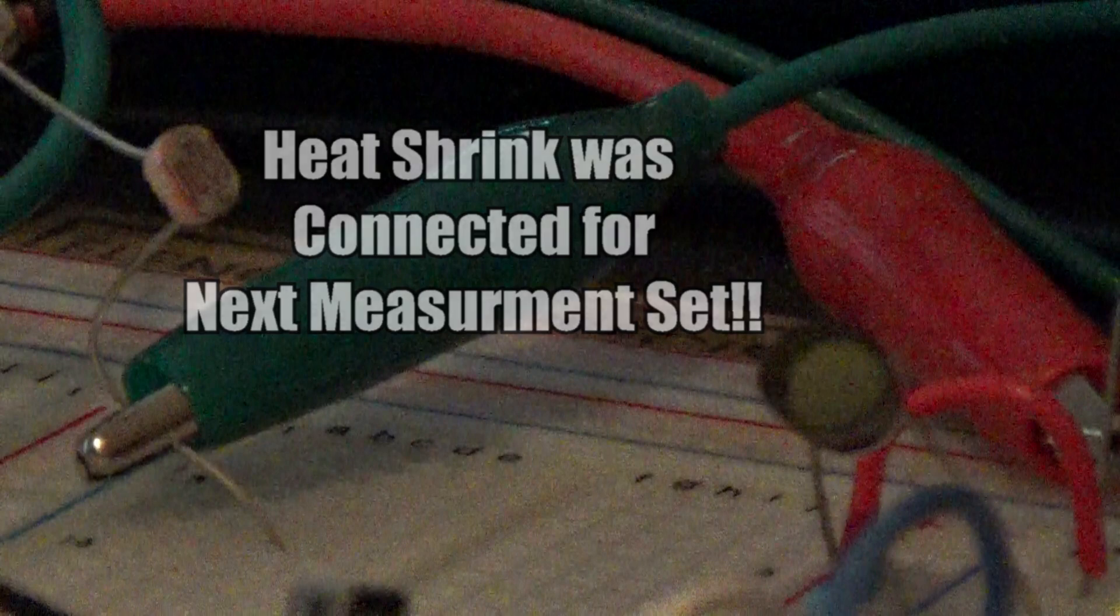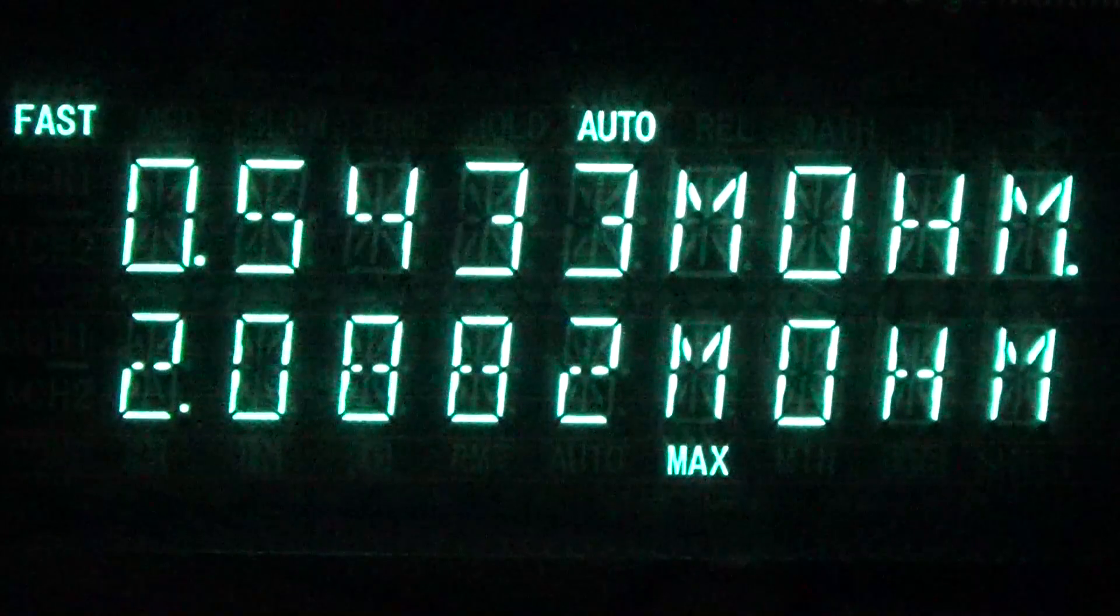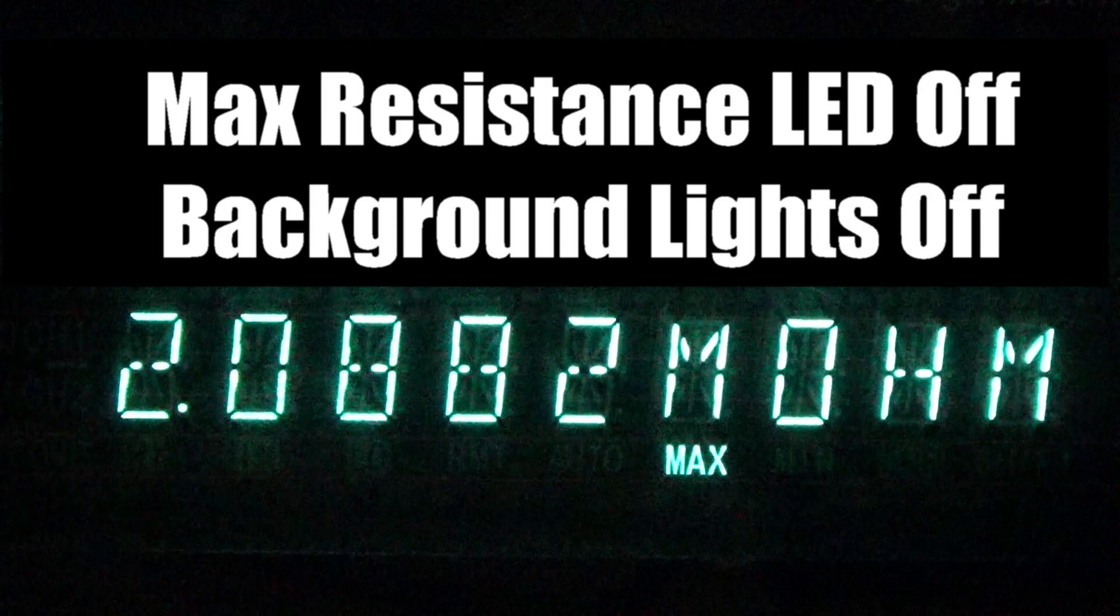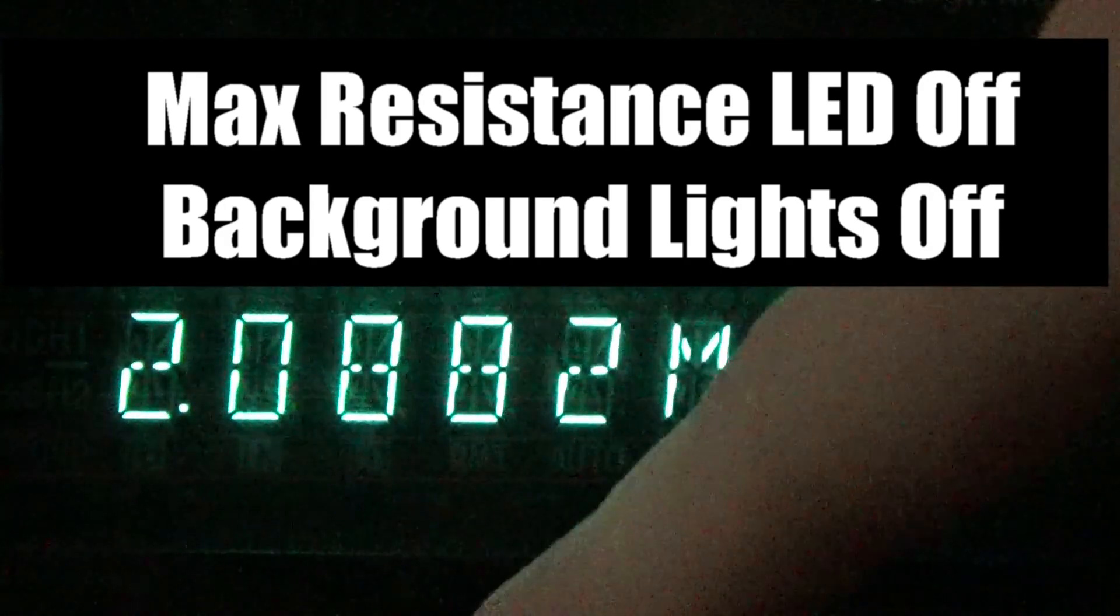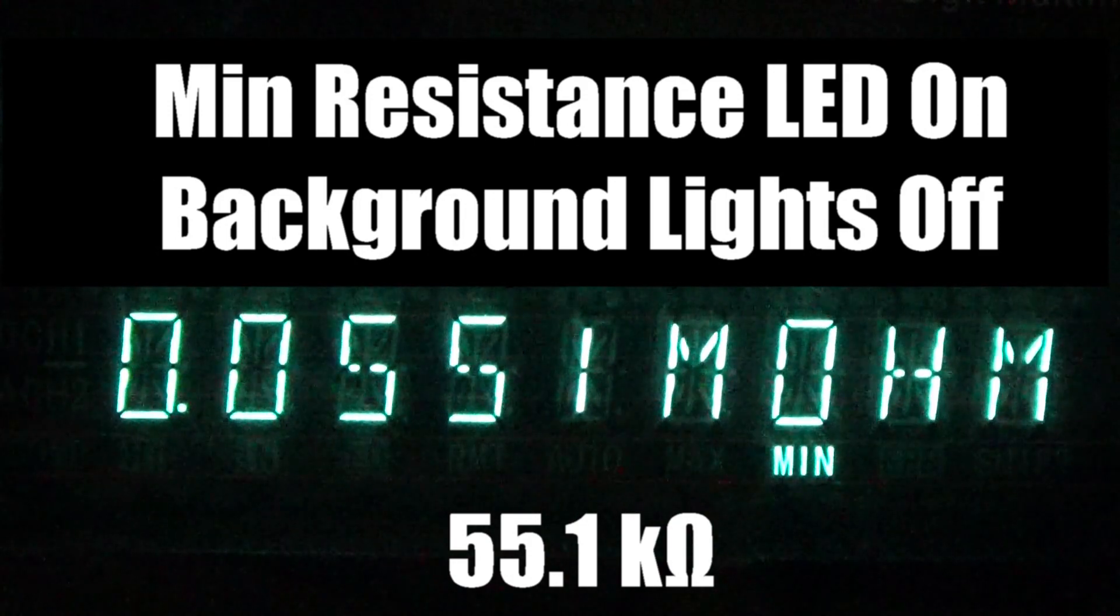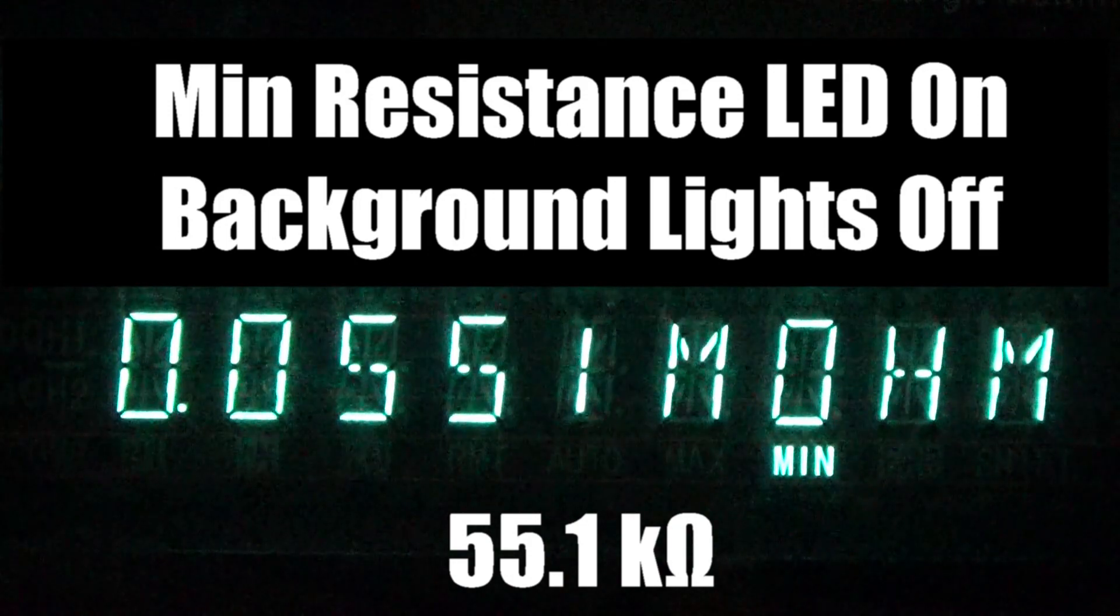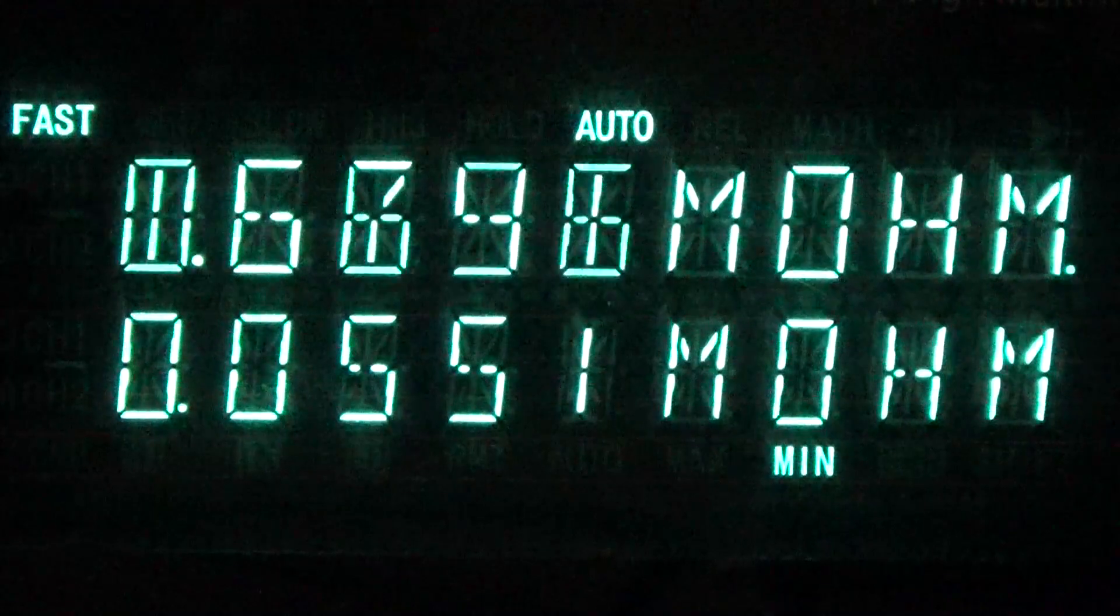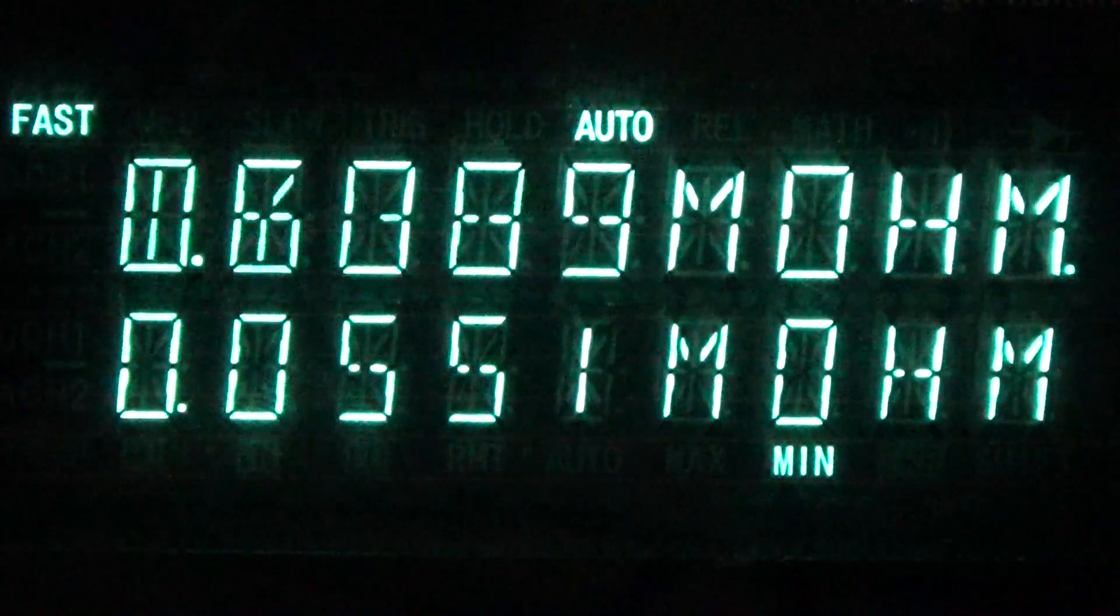I'll turn off the lights in the background and take the same series of measurements. Our new maximum resistance is 2.882 megaohms. Our new minimum is 55.1 kilohms. If you design a pedal and put it in an enclosure, you want to take some measurements when the lights are off. This better mimics what's going to happen inside an enclosure.